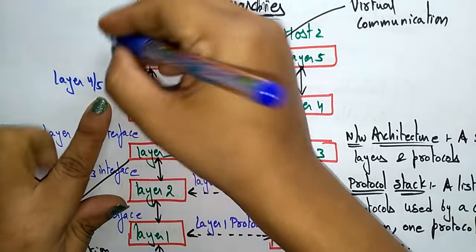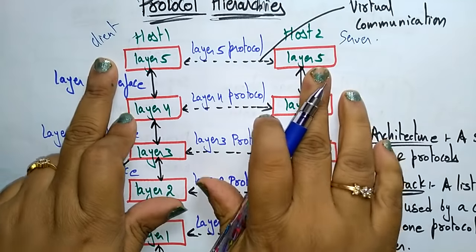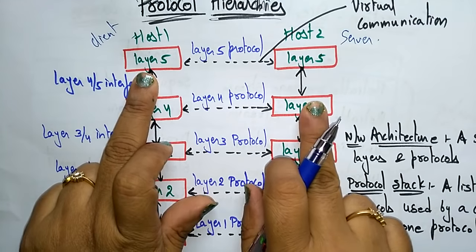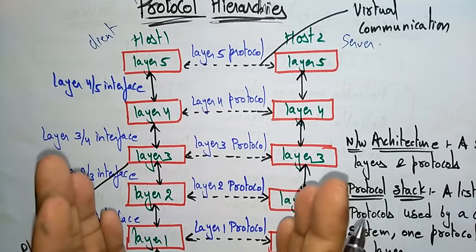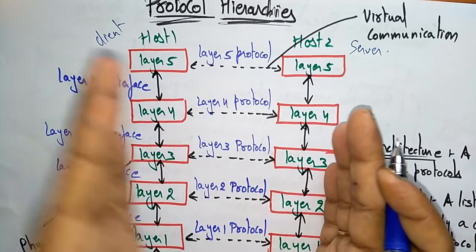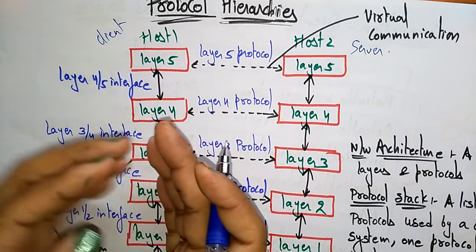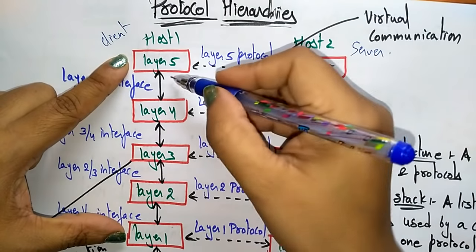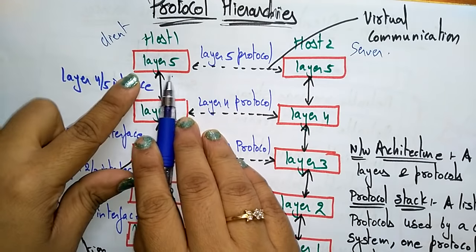We have host one and host two. Host one can be a client or a server, and host two can be a client or a server — just imagine these are two computers. The computer at host one is divided into five layers: layer five, layer four, layer three, layer two, and layer one.